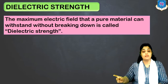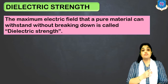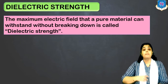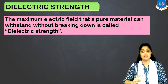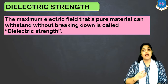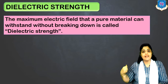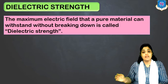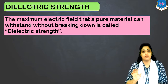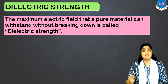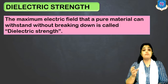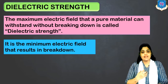The second property which is very important for selection of a good dielectric is dielectric strength. A good dielectric material should have a low dielectric loss and a very high dielectric strength. If a dielectric material has a higher strength, it will not break down easily. Dielectric strength is the maximum electric field that a pure material can withstand before breaking down.